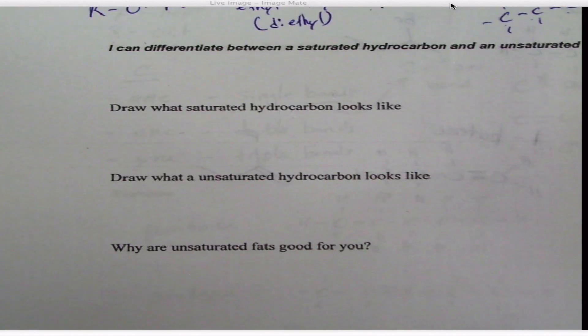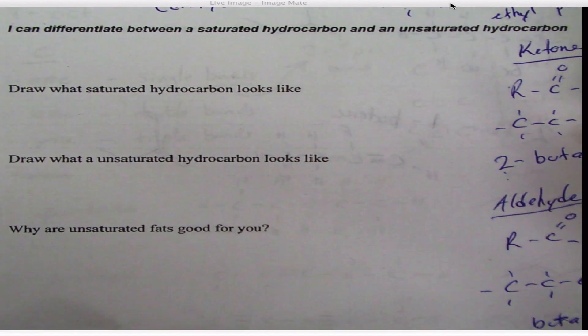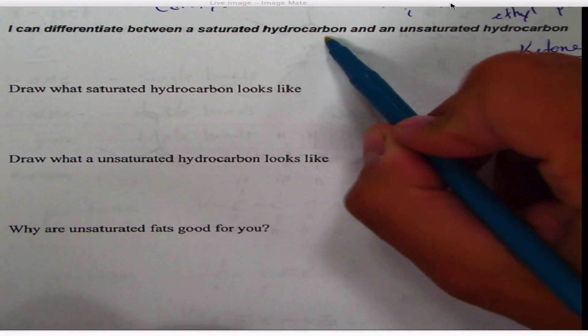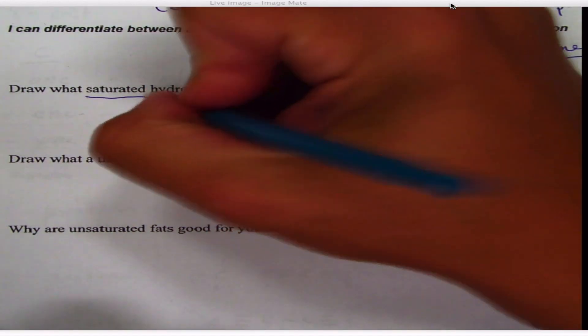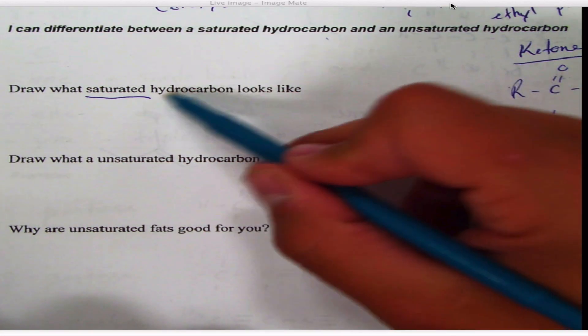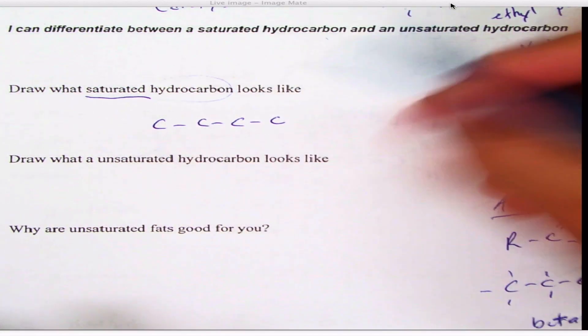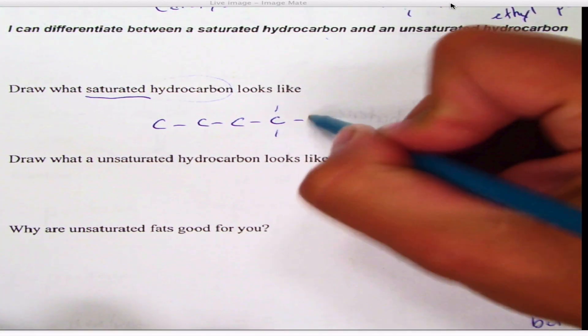All right, last lecture in your organic chemistry unit is going to be about saturated versus unsaturated hydrocarbons. So when something is saturated, that means it's full—you can't get anymore. And when we're talking about hydrocarbons, that means we have the maximum amount of hydrogens that a carbon will allow it to have.